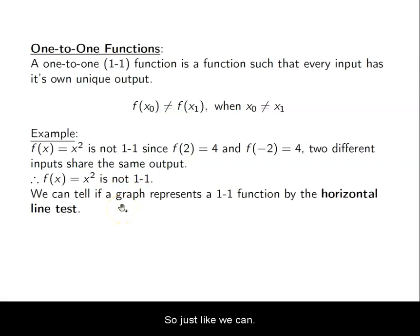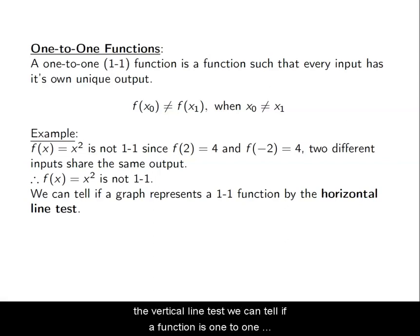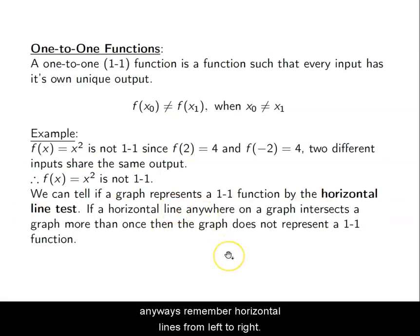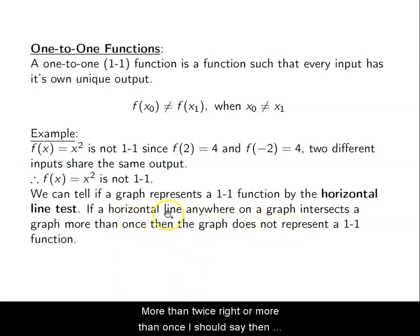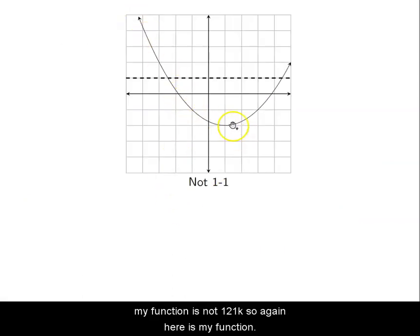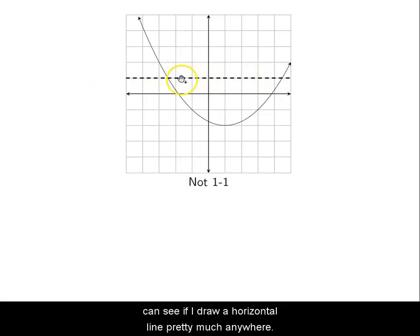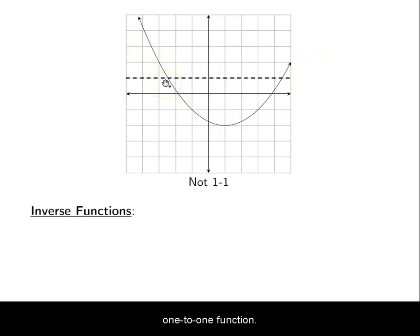Just like we can tell if a relationship is a function with a vertical line test, we can tell if a function is one-to-one by the horizontal line test. If I can draw a horizontal line anywhere — remember horizontal goes from left to right — and that line crosses my graph more than once, then my function is not one-to-one. Here, the dashed line crosses the graph in two different places, so it is not a one-to-one function.